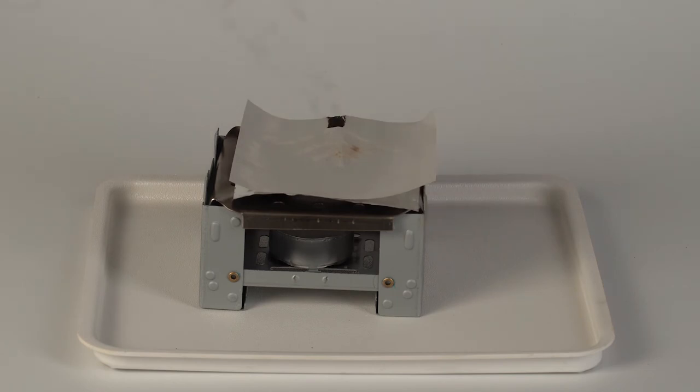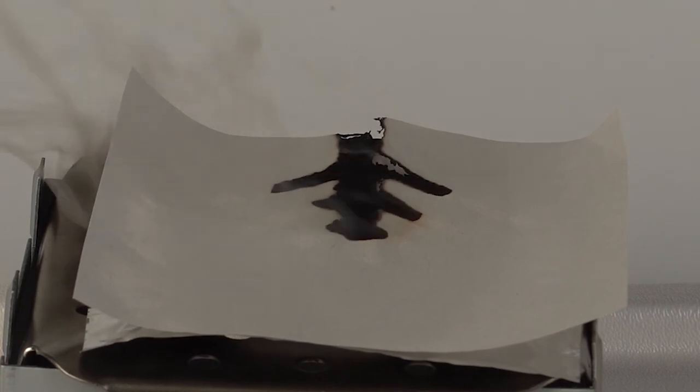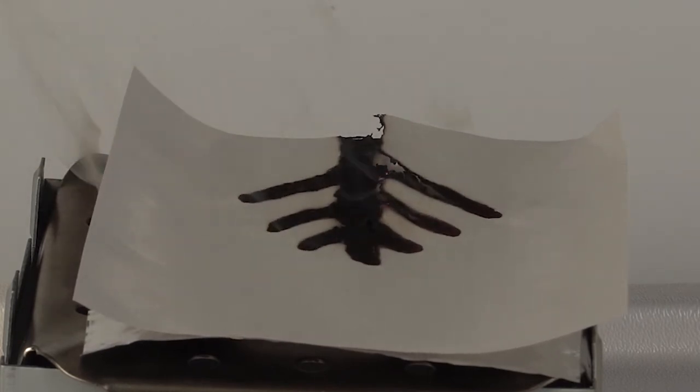Touch the smoldering splint to the edge of the paper. Watch how your pattern emerges as a burned image. The paper begins to smolder due to the presence of oxygen in the air.